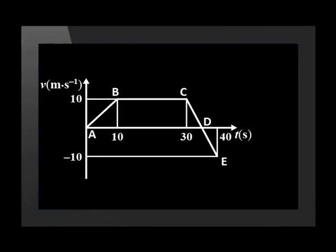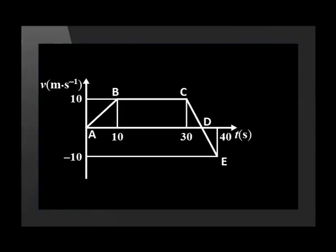We can see that in this graph we have both positive and negative velocity vectors. Remember that a negative velocity means that it is moving in the opposite direction. We were told that the car was originally traveling west, so we write 'west' next to the velocity axis in the positive direction. We see from the graph that John started at an initial velocity of zero and then his velocity increased to 10 meters per second in 10 seconds. We know that this increase was uniform because we have a straight-line graph.